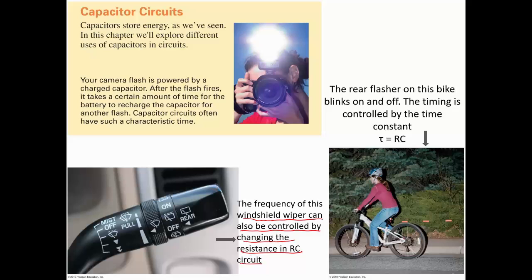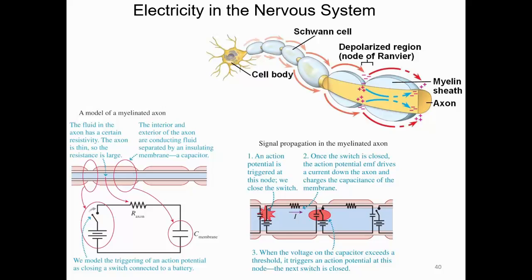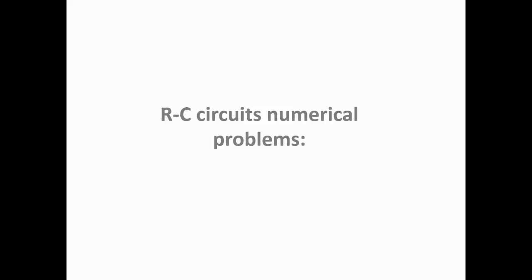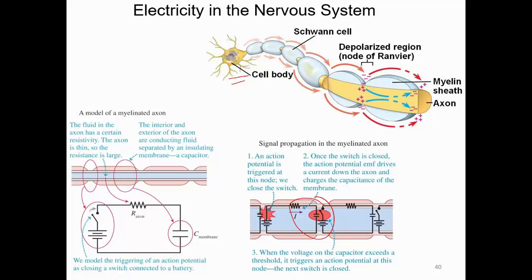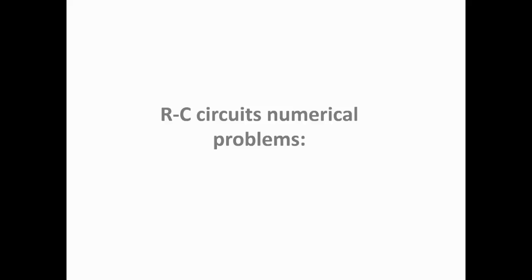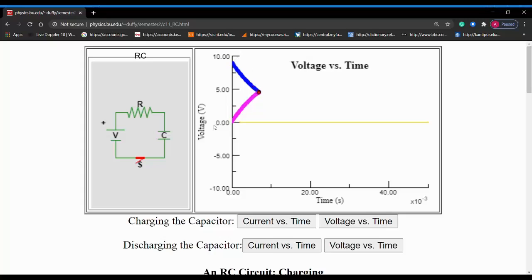Even electricity in the nervous system follows similar principles. The basic building block of the nervous system is the neuron, and neurons turn on and off — there are billions of them firing to recognize patterns. This turning on and off of neurons can be modeled using the RC charging and discharging model. Additionally, numerical problems and a charging/discharging animation using an applet will be shown separately.